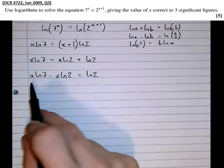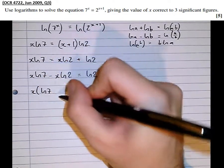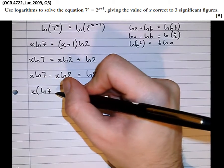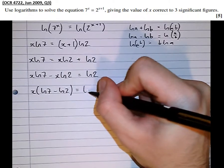And then notice we've got all the x's on the left hand side now. If we factor out the x, take x out as a factor, we get x bracket log 7 minus log 2 equals log 2.